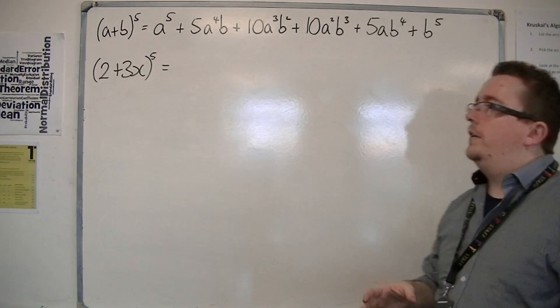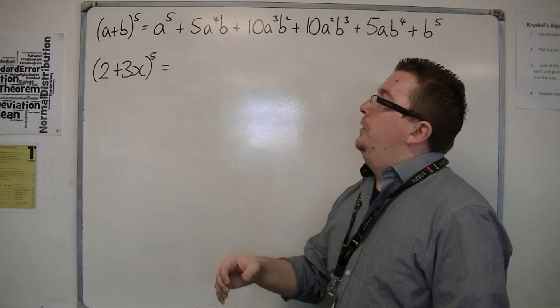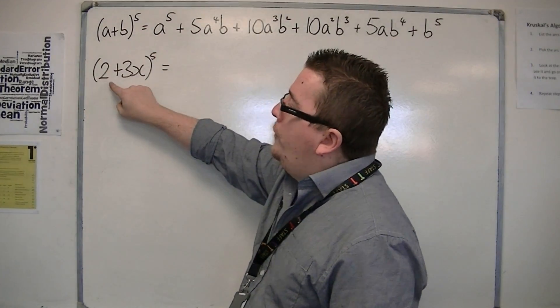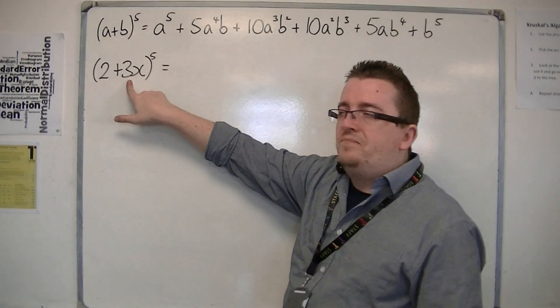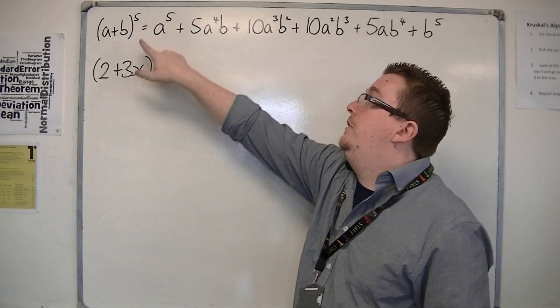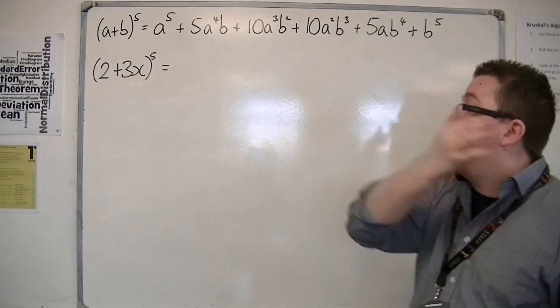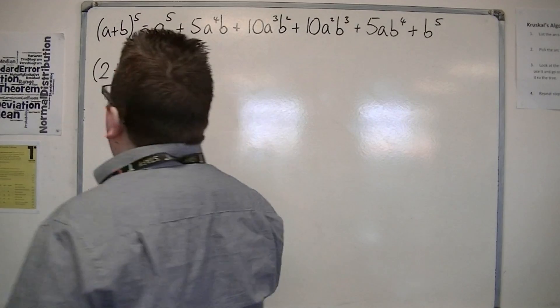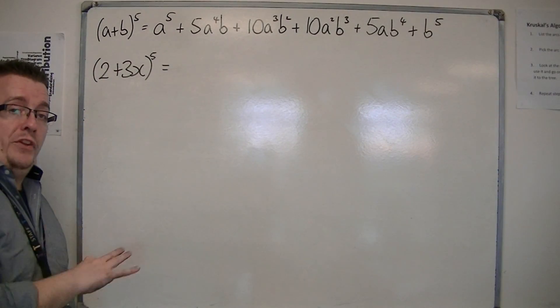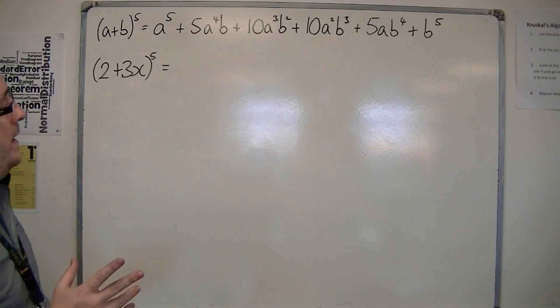I'm going to show you how this works. You should probably be able to spot that A plus B is referring to the 2 plus 3x. So the A is 2 and the B is 3x. The power is the same in both. So you can do it as a direct substitution, where the A's become 2 and the B's become 3x.